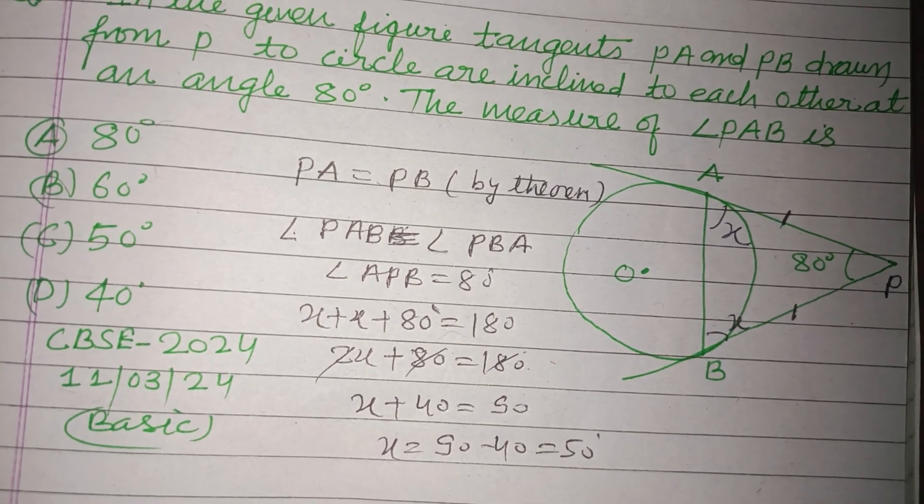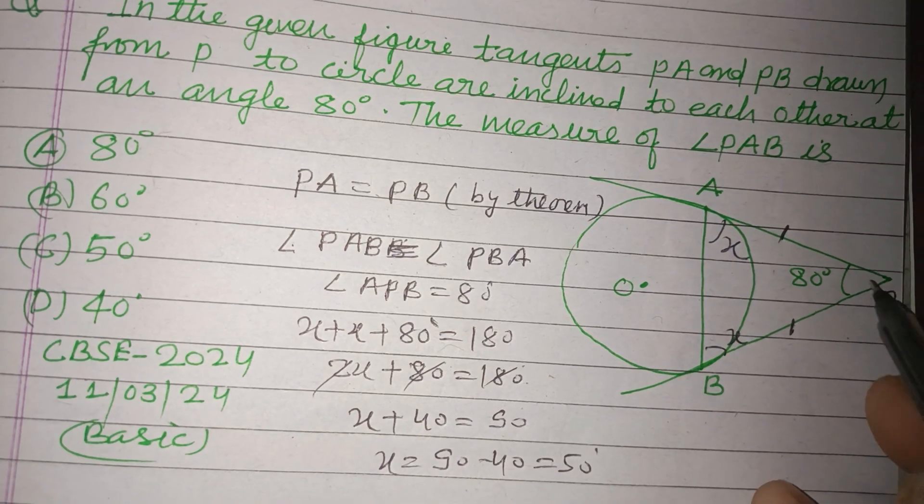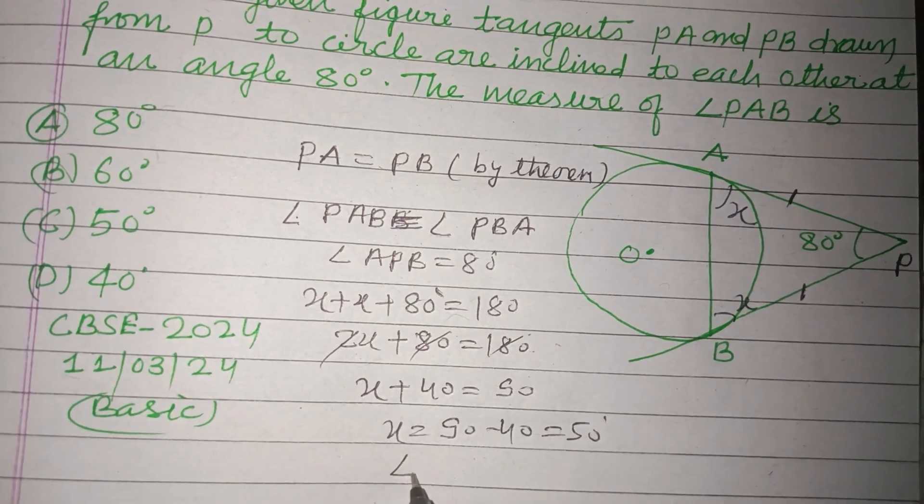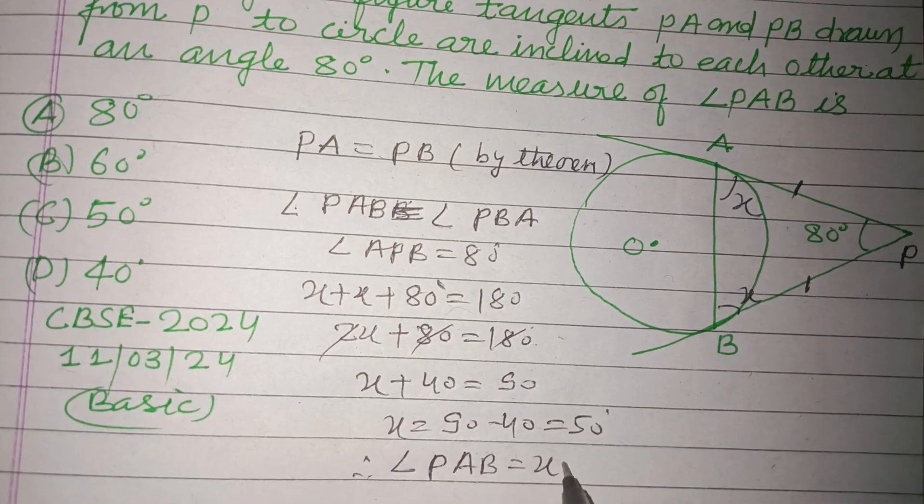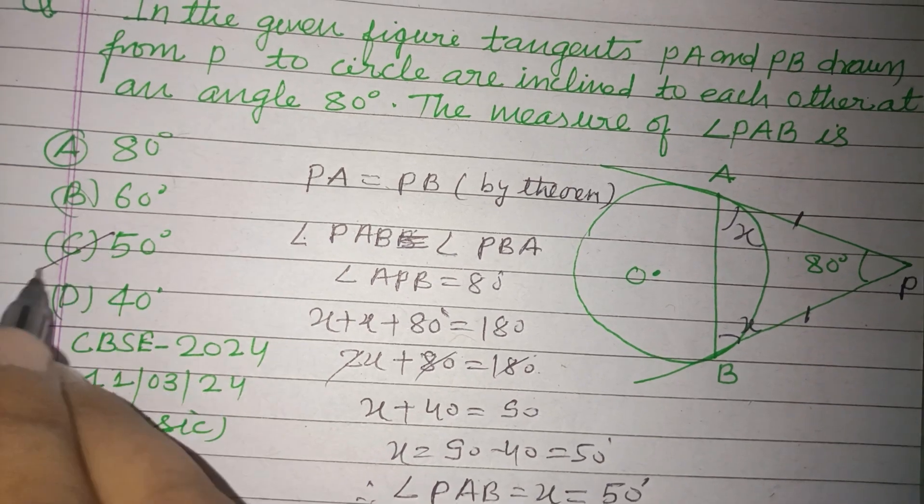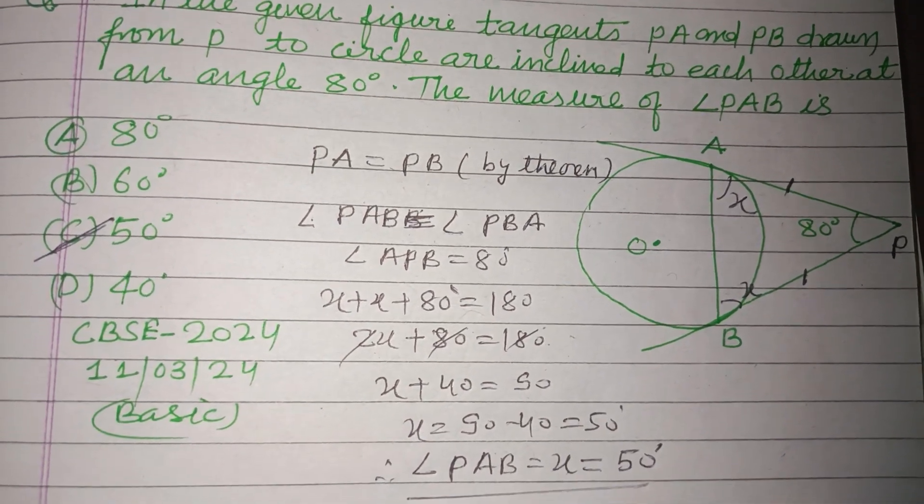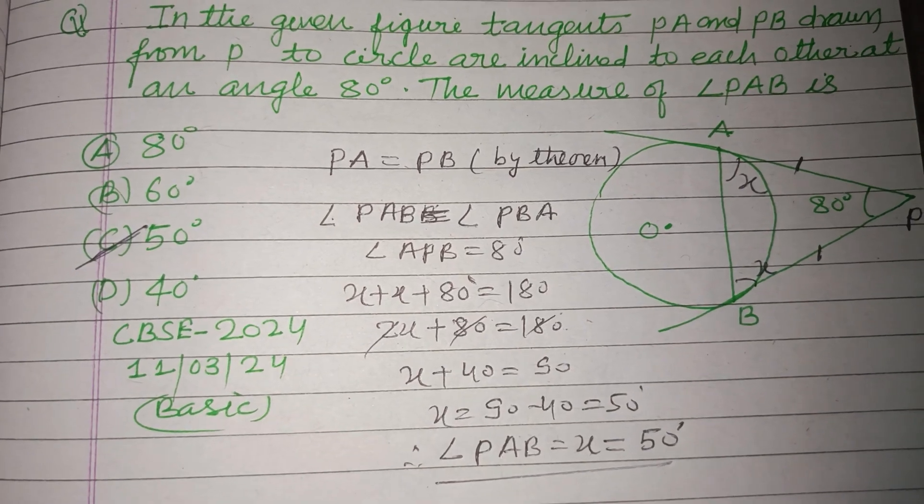50. So X is 50 and angle PAB is taken by us as X, so X equals 50. So 50 is the correct answer to this question. I hope you got it. Please like the video, subscribe the channel. Thanks for watching.